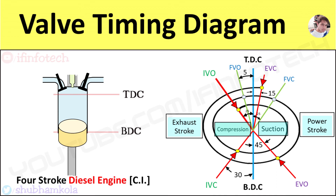Now we discuss why we need valve timing diagrams. Normally an engine completes around one lakh cycles per minute, and there are a number of processes involved in a single cycle. This makes it necessary to have an effective system that enables high compression ratio, cleaning of the engine cylinder, and ideal timing for opening and closing of inlet and exhaust valves to protect the engine from defects like knocking or detonation.